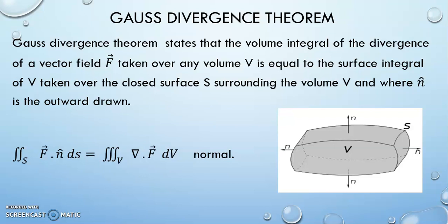taken over the closed surface capital S, surrounding the volume V, and where n cap is the outward drawn normal. This is very important. You should try to have a clear picture about this n cap. N cap is always the outward drawn normal.